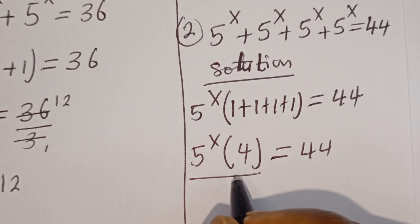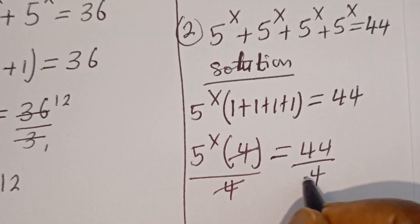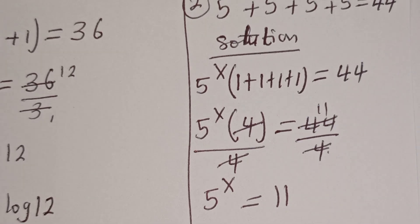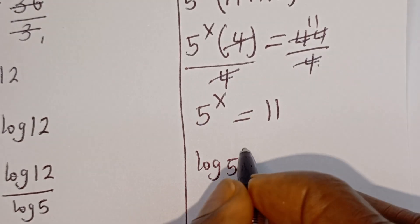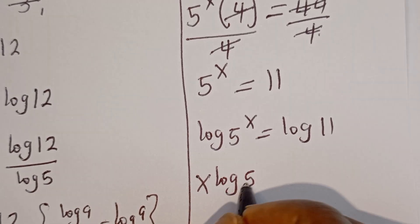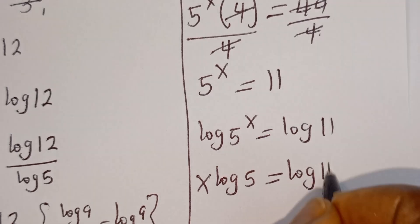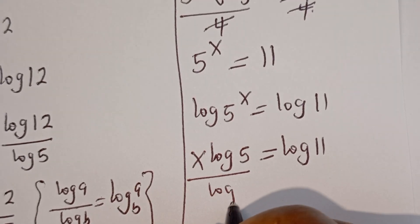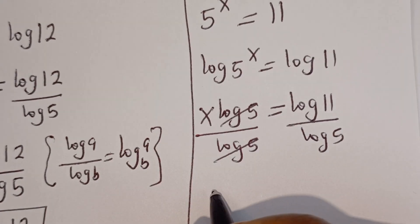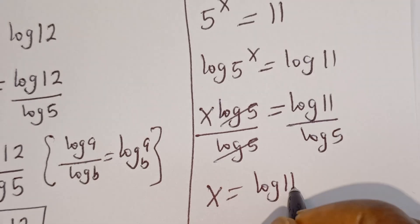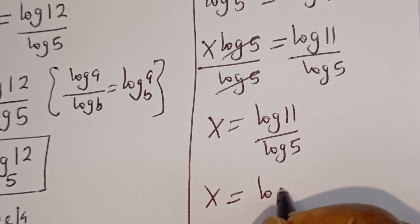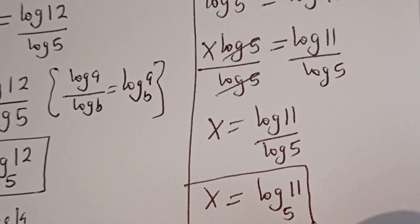Let's divide both sides of the equation by 4 — this will cancel, giving us 5 to the power of X is equal to 11. Let's take the log of both sides: log of 5 to the power of X is equal to log 11. Then X times log 5 is equal to log 11. Dividing both sides by log 5, we get X is equal to log 11 divided by log 5, which equals log 11 base 5. This is the final answer.